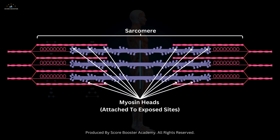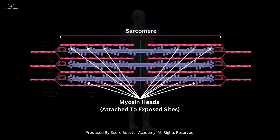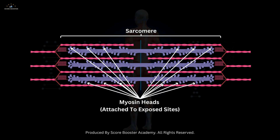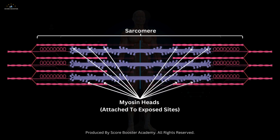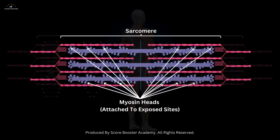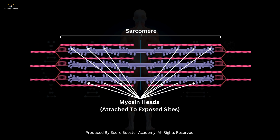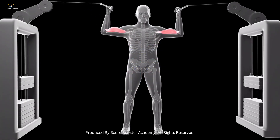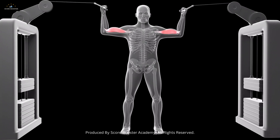The myosin heads then pivot, pulling the actin filaments toward the center of the sarcomere in a motion known as the power stroke. This action shortens the sarcomere, resulting in muscle contraction.